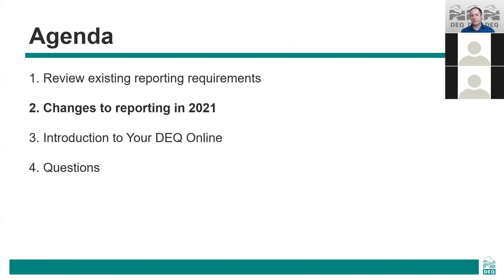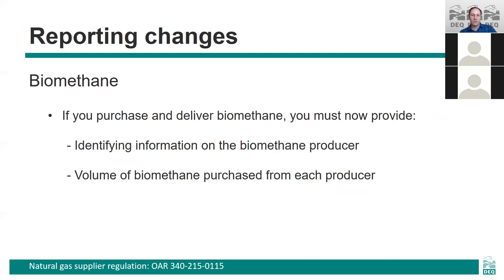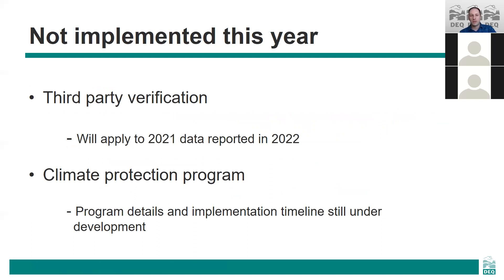Moving on to highlight some of the new data elements that must be reported starting this year: you're now required to report the volume of natural gas transported on your system for each natural gas marketer, and we require contact information for each of these marketers as well as the volume for each marketer. We also now require that any biomethane that you purchase and deliver to a location in Oregon be reported as a separate total volume, and you're required to provide the volume of biomethane purchased from each vendor and contact information for the vendor. Third-party verification is not required for your 2020 data but will be required for 2021 data that you report next year.